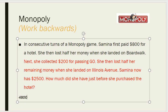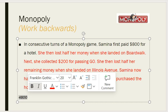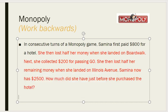Let's go back one more step. She then lost half of her money when she landed on a problem. If we reverse this step, she had more money before. This means we multiply 4800 by 2. What do you get? 9600. Now we start with 9600.